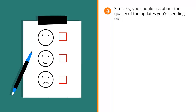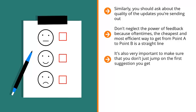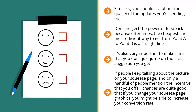More specifically, ask your list members: 'What improvement should I make for you to forward my emails to people you know?' Don't neglect the power of feedback — often the cheapest and most efficient way to get from point A to point B is a straight line. Ask your list members, but offer an incentive. It's also important to make sure you don't just jump on the first suggestion you get. Look at the total amount of responses and pay attention to the most common theme.